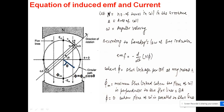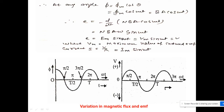The flux is maximum when the plane of the coil is perpendicular to the flux lines, meaning the field direction and area vector are parallel. When the plane of the coil is parallel to the flux lines, the flux is zero. So at any angle, we can write the flux expression, differentiate it, and use it.